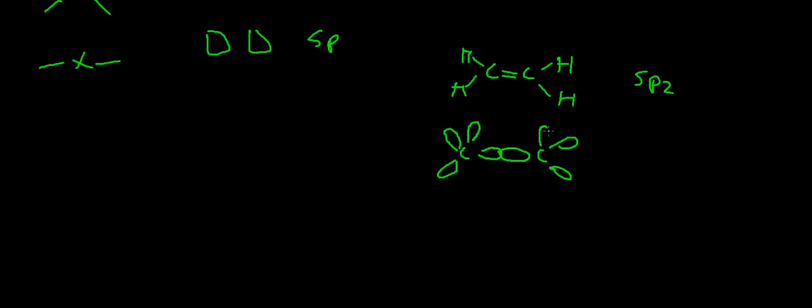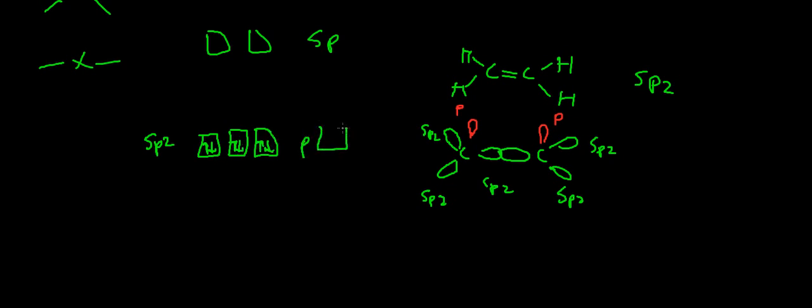But there's also this pi bond. And what that is, is that on top here, actually I'll do this in a different color, is a P orbital. So this is all sp2. And this is a P orbital. So what the electrons would look like. Here are the three sp2 orbitals. And then there would be a leftover P orbital. That's not hybridized. And that's where the double bond would be.